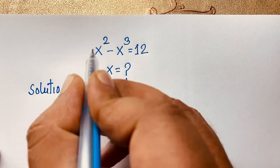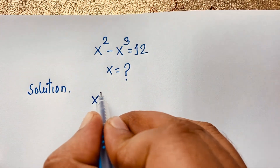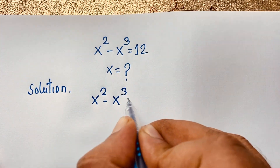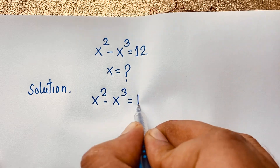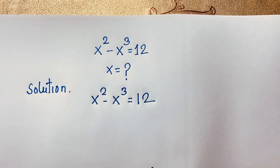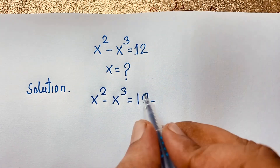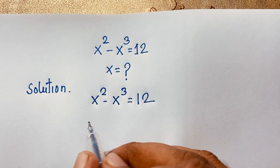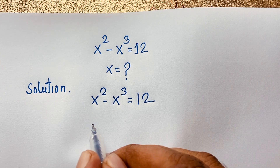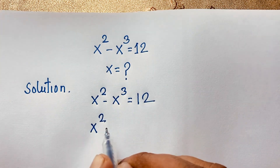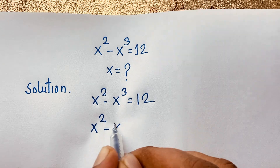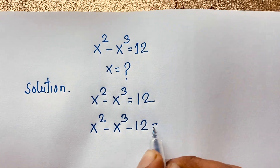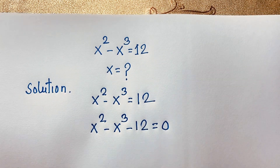Our question is x to the power 2 minus x to the power 3 is equal to 12. Now, if I move this 12 to this side, it will be negative 12. So I can say this expression x squared minus x to the power 3 minus 12 is equal to 0. I subtract 12 from both sides.